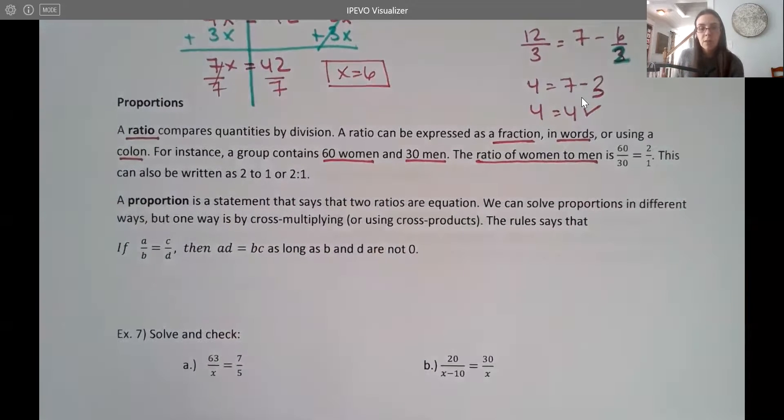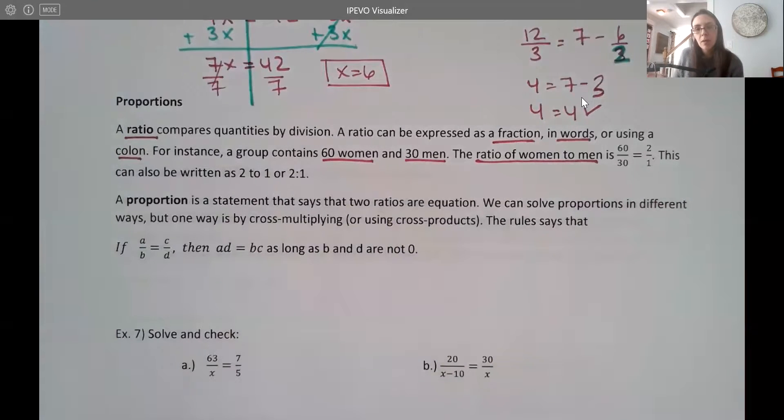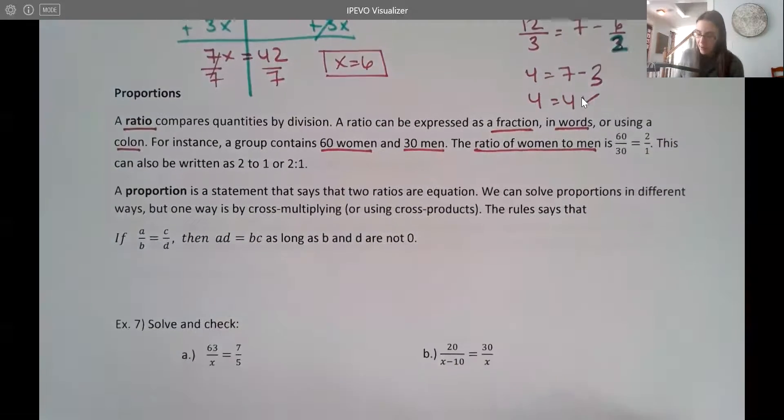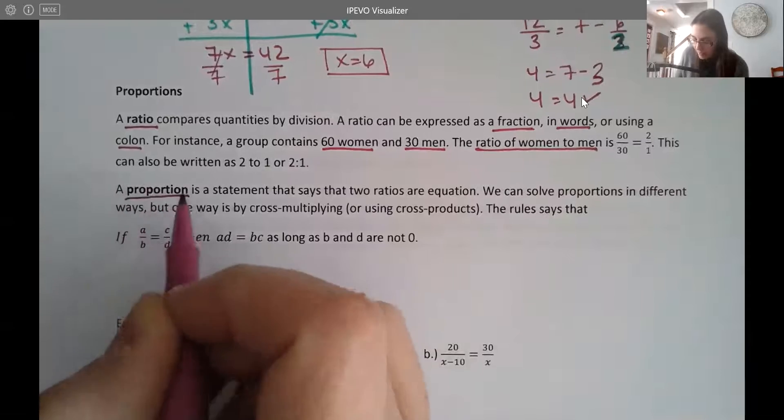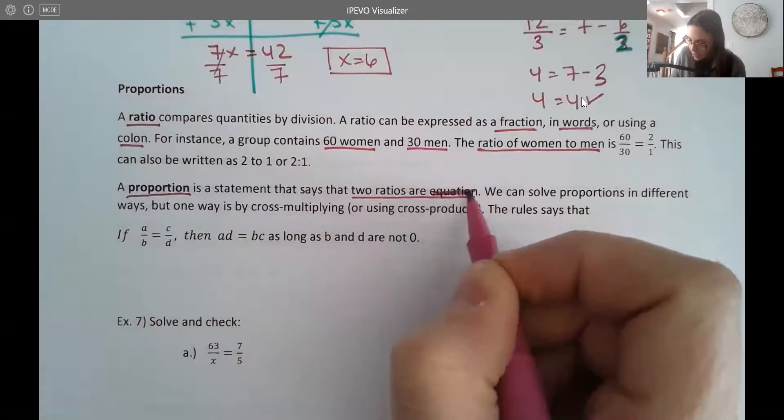So those are three different ways that we write our ratios. Now, in mathematics, we tend to use the fraction form the most because we know how to work with fractions. A proportion is a statement that two ratios are equal.